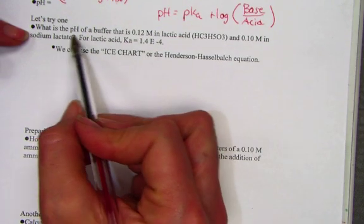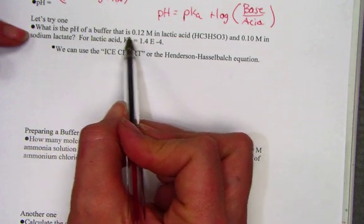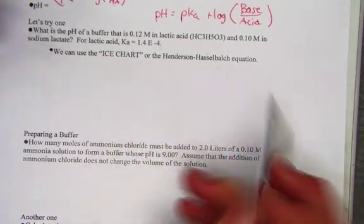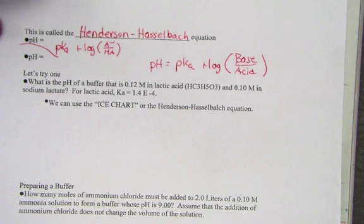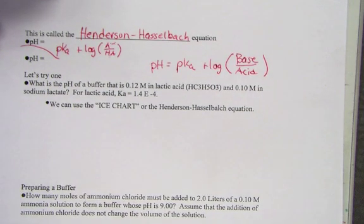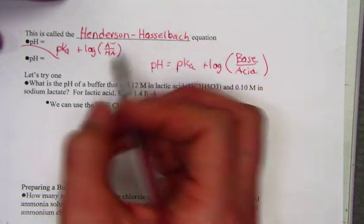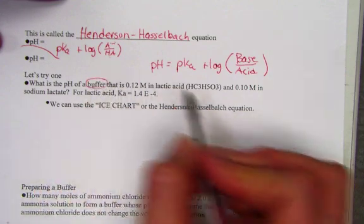It asks us, what is the pH of a buffer that is 0.12 molar in lactic acid and 0.1 molar in sodium lactate? For lactic acid, Ka is 1.4 times 10 to the negative fourth. We could go through the process of using an ice chart, but the key here says that it's a buffered solution.